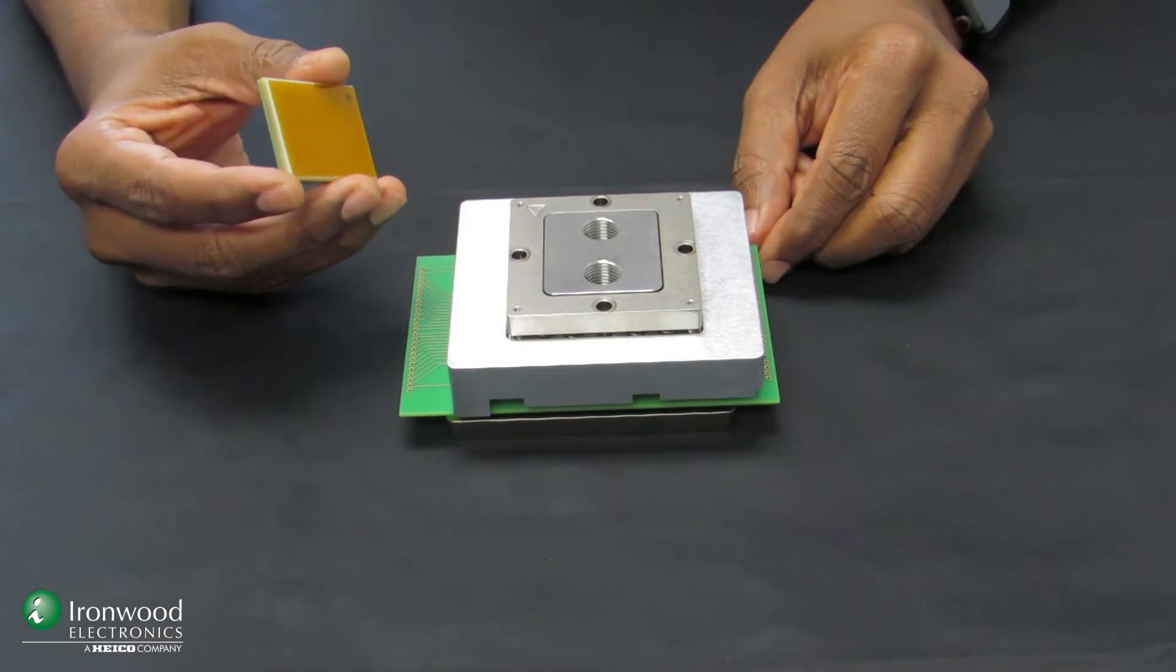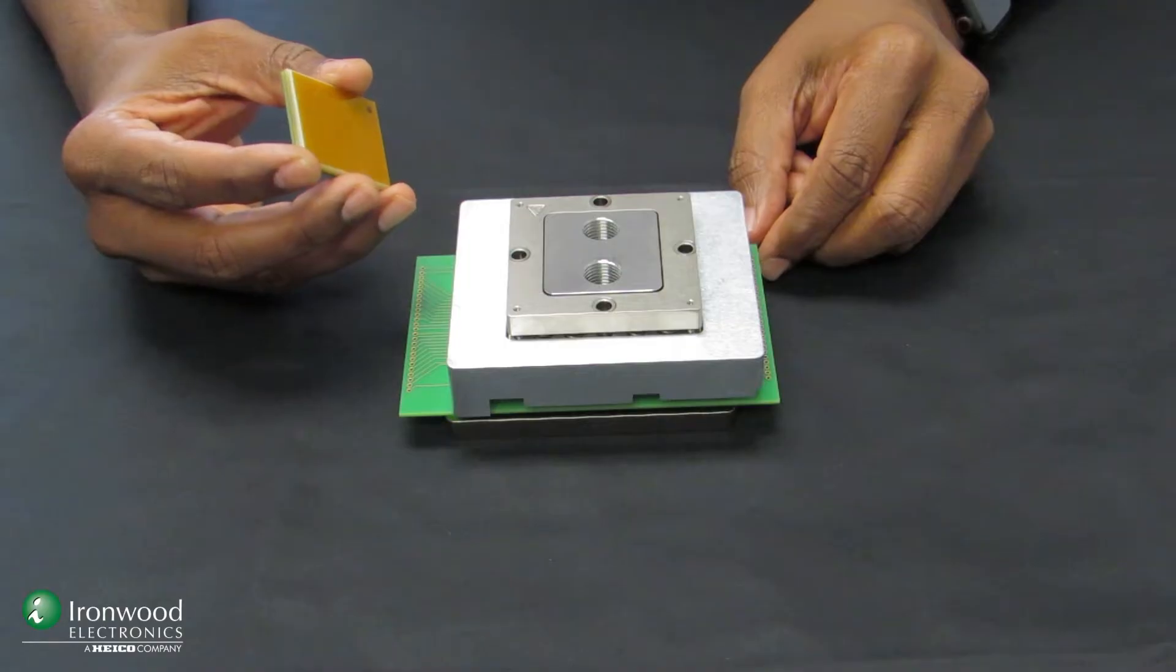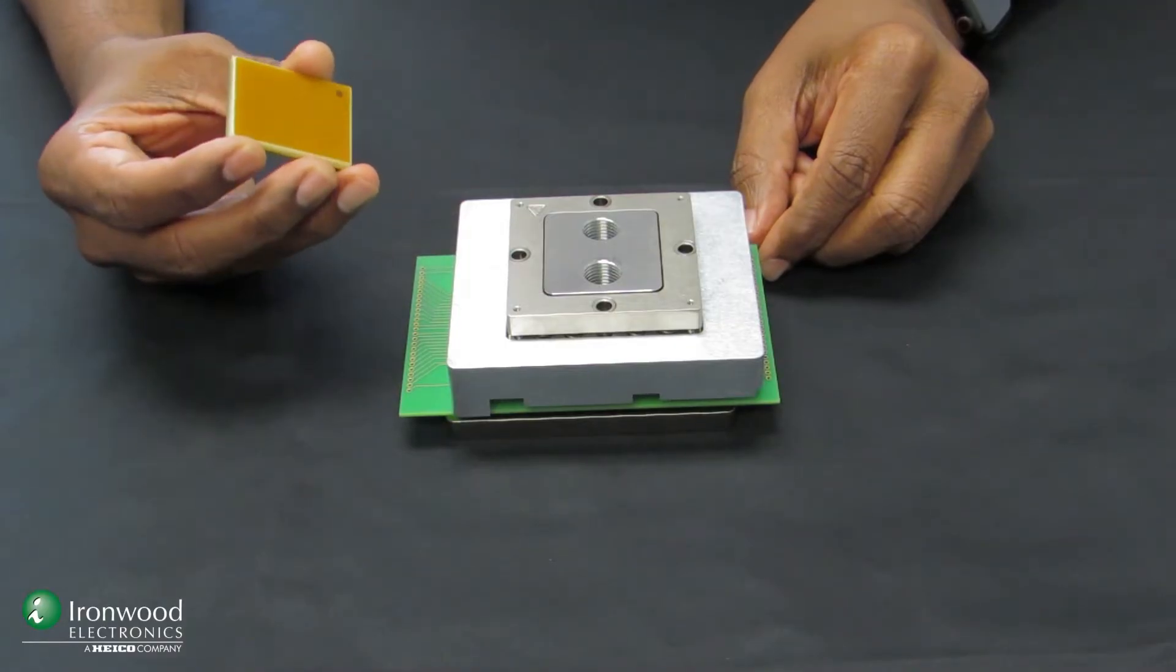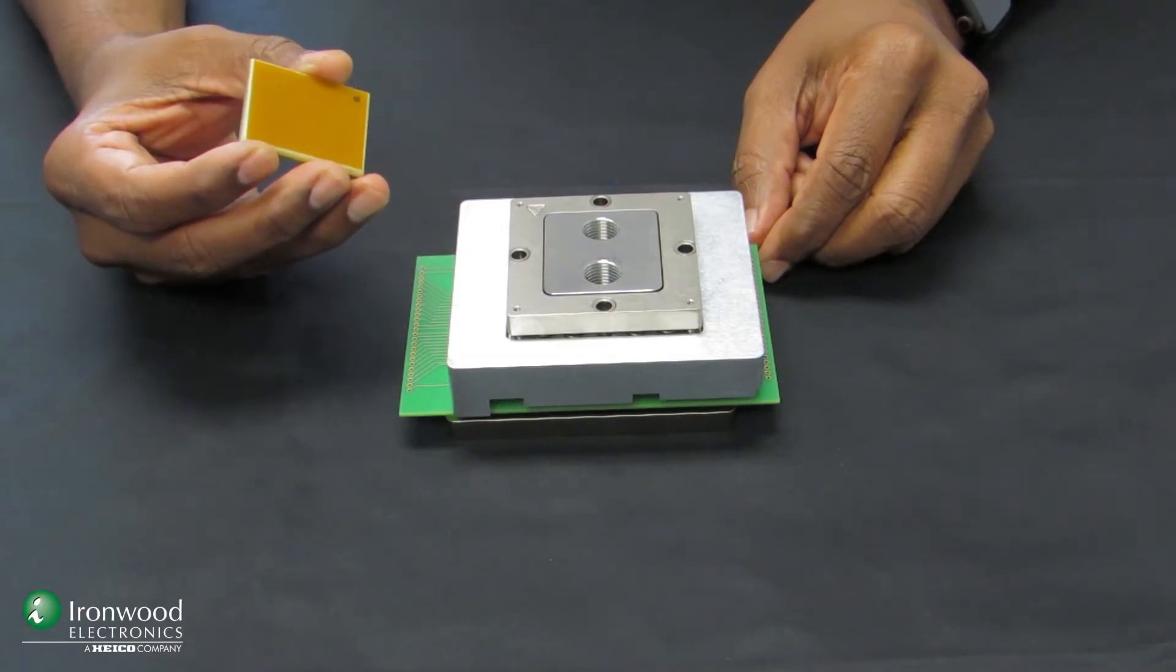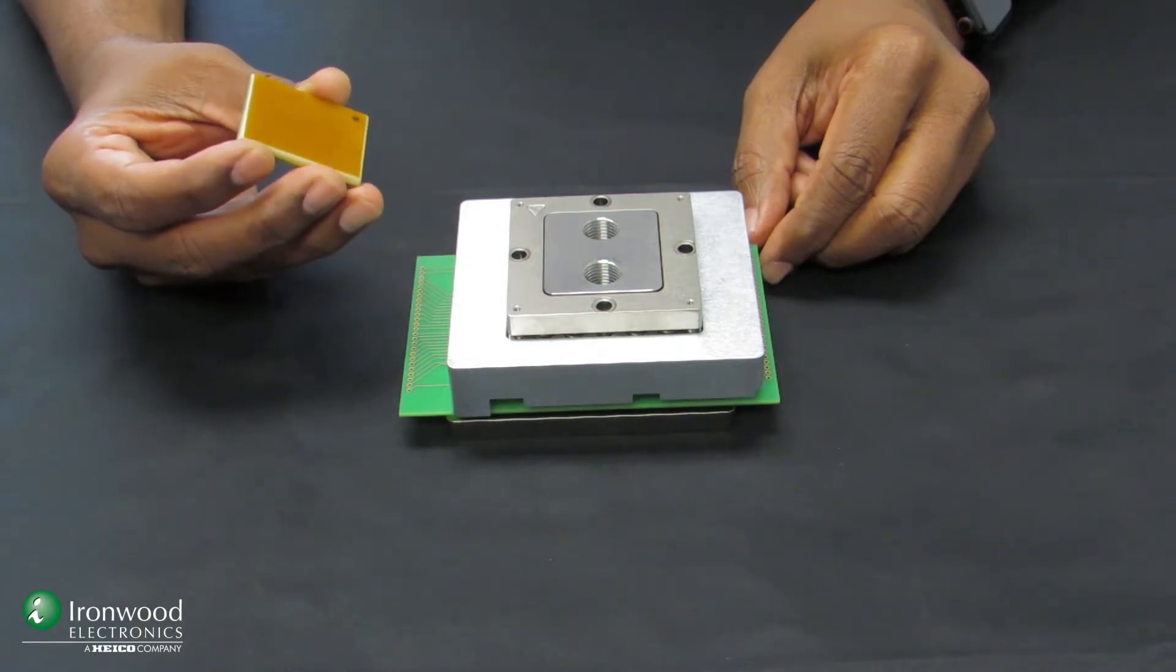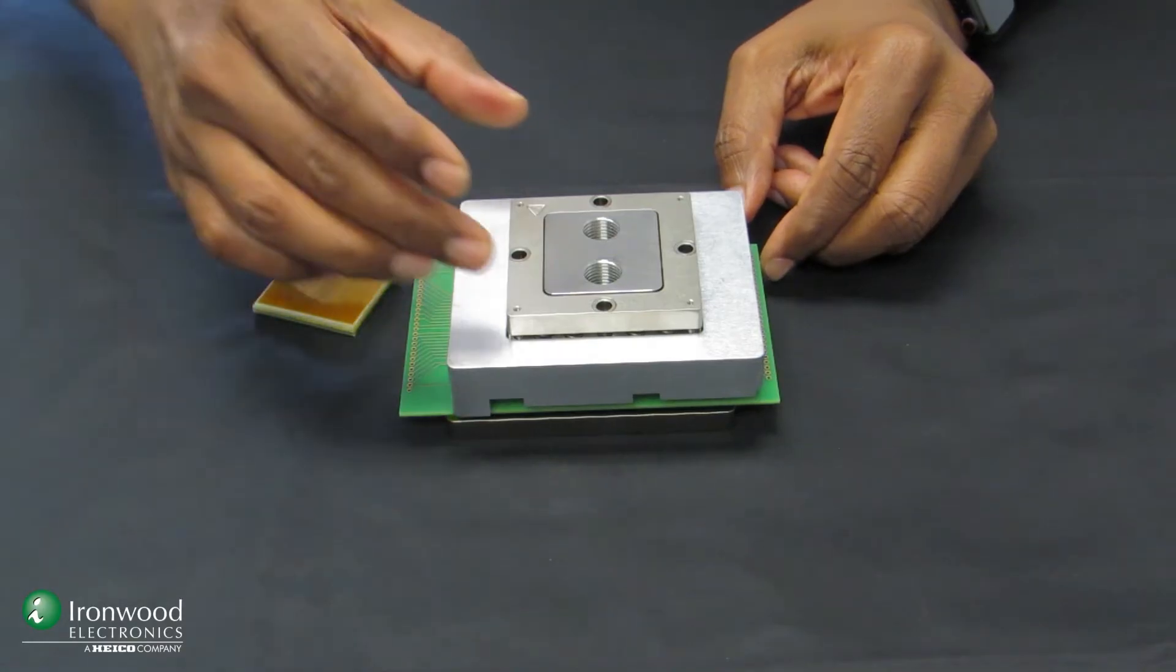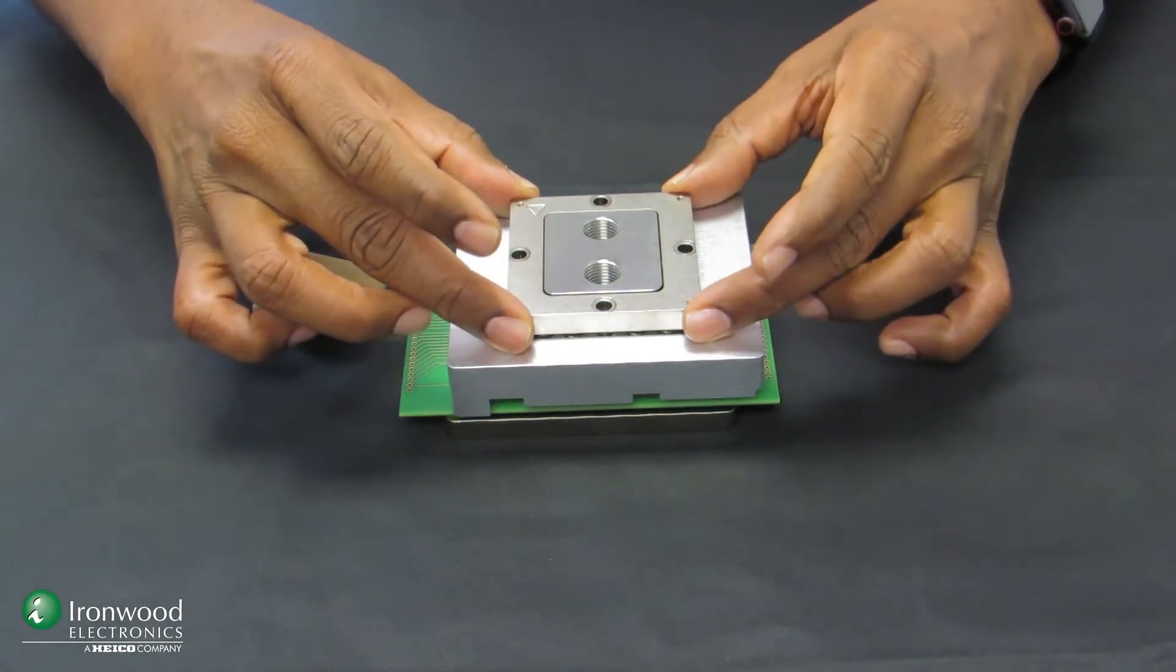It generates about 40 watts of heat. Because it is used in an industrial environment, the temperature of the chip has to be maintained below 80 degrees Celsius. So in order to do that, Ironwood has developed a liquid cooling lid.